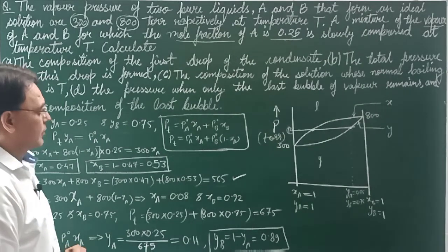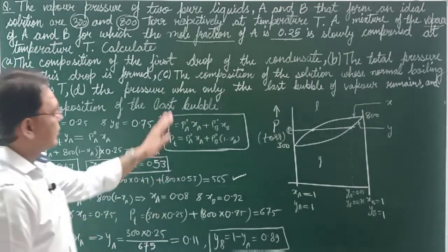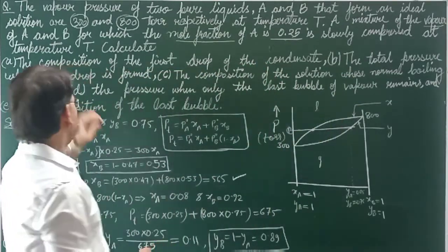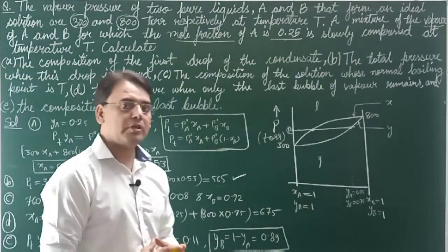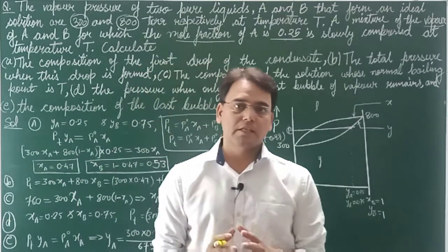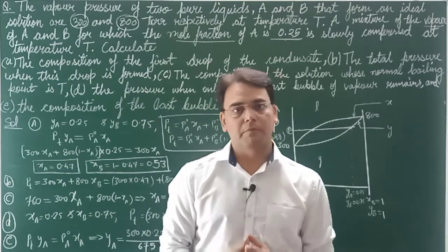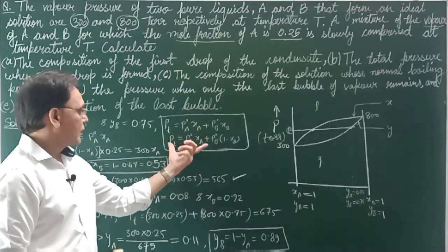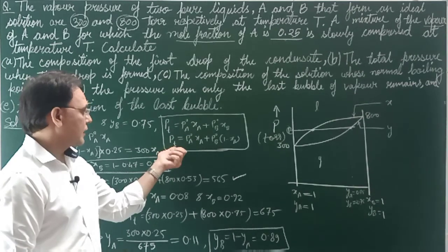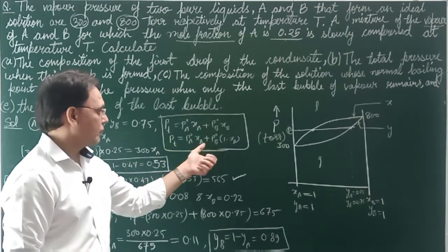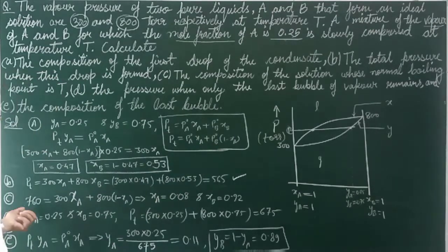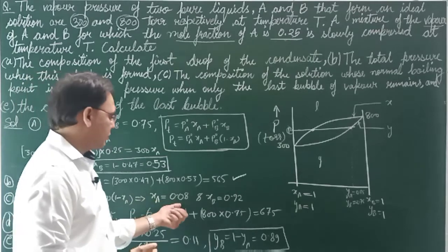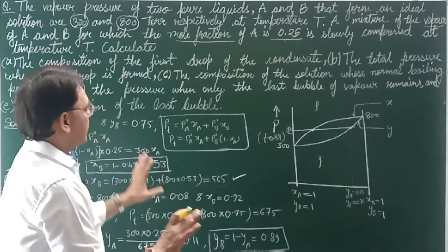Now part C asks for the composition of the solution whose normal boiling point is T. Remember: when 'normal boiling point' is mentioned, external pressure = 1 atm = 760 torr. Apply the formula again with P_total = 760: 760 = 300·x_A + 800·(1 – x_A). Solving gives x_A = 0.08 and x_B = 0.92. That is the answer for part C.